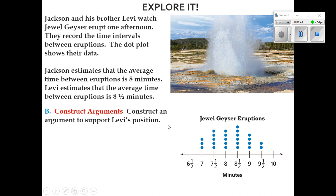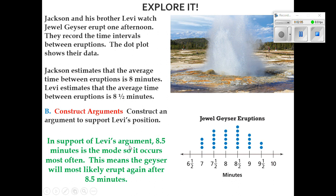So that tells me, in support of Jackson's argument, eight minutes is the median of the data. That is, half of the time the geyser erupts every eight minutes or less, and the other half of the time the geyser erupts every eight minutes or more. Now, they want us to construct an argument to support Levi's position. And he says it's eight and a half minutes. I think they went by the mode. And the mode is something we're going to learn today. It's the most often used data that we see. So the thing that we see that happens the most often in the data is it being eight and a half.